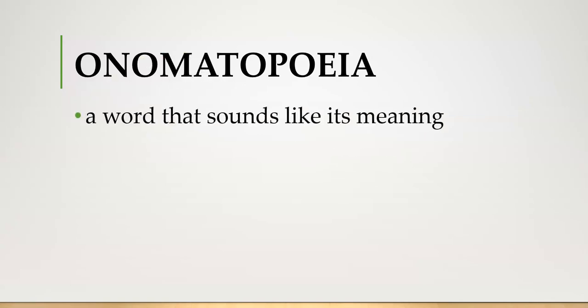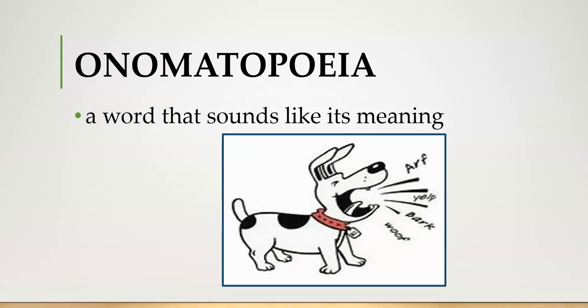Onomatopoeia are words that sound like their meaning. The words exist purely to be a sound. They represent a sound. Words like arf, yelp, bark, and woof. Whenever we refer to noises that animals or nature makes, those would be onomatopoeia.